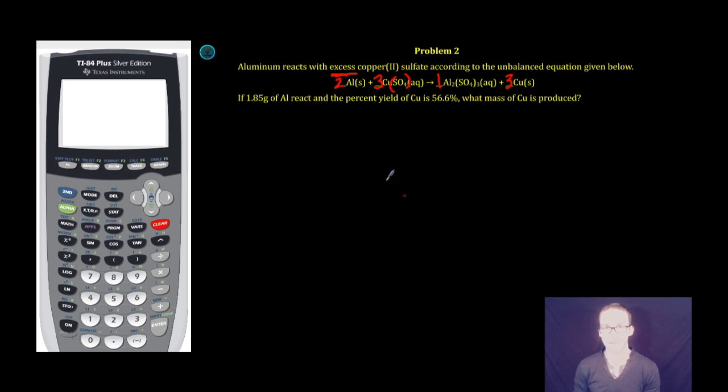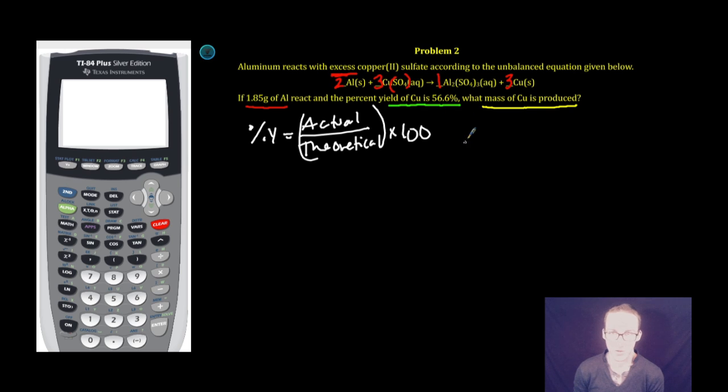let's tackle this problem number two. It says if 1.85 grams of aluminum react and the percent yield of copper is 56.6%, what mass of Cu is produced? Okay, this is still a percent yield problem. The percent yield formula is actual over theoretical times 100. The difference here is we're provided with the percent yield. We're told that the yield is 56.6%. We want to know how much copper is actually produced if we can only expect a 56.6% yield.